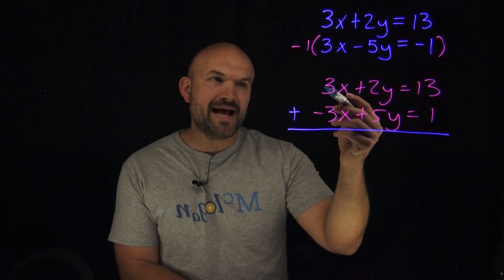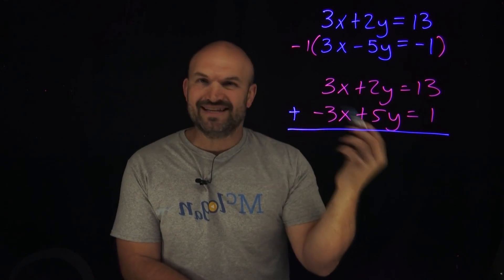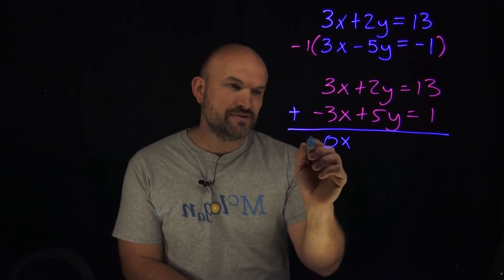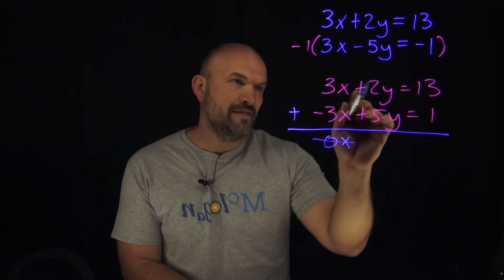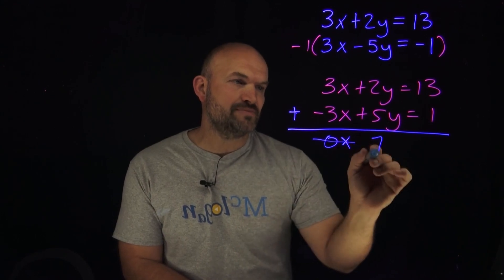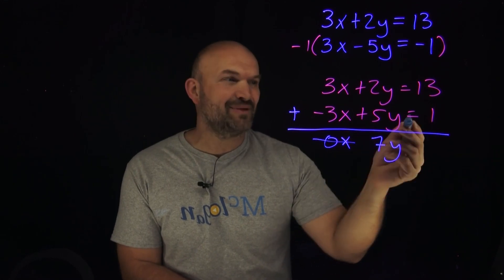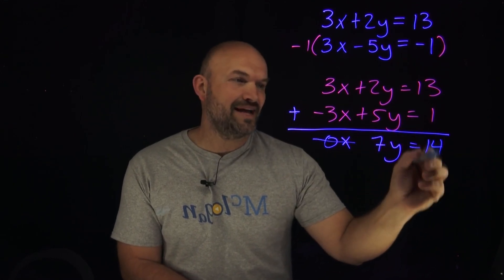Now the nice thing here is when I add 3 plus negative 3, that's just going to give me 0x, and 0 times anything is just 0, so we can disregard that. Then I have 2y plus 5y, which is going to be 7y, and then 13 plus negative 1, or plus 1, is going to equal 14.